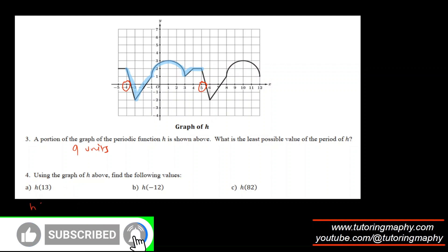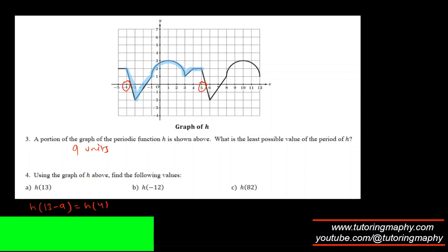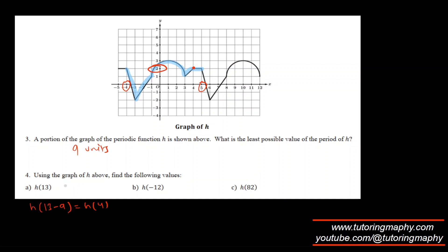For h of 13: subtract 9 to get h of 4, and h of 4 is 2. For h of negative 12: add 9 to get h of negative 3, which is negative 2. For h of 82: since 9 times 9 is 81, subtract 81 to get h of 1, and h of 1 is 3.